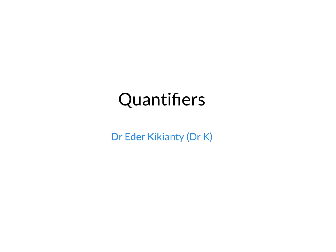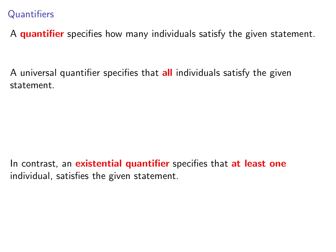Now we're going to talk about quantifiers. So what is a quantifier? A quantifier specifies how many individuals satisfy the given statement. There are two kinds of quantifier: the universal quantifier and the existential quantifier. Universal quantifier specifies that all individuals satisfy the given statement. In contrast, existential quantifier specifies that at least one individual, maybe more, satisfy the given statement.